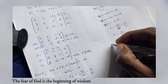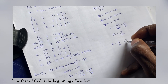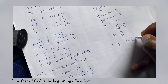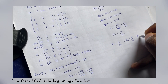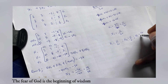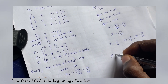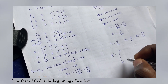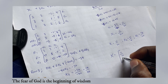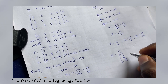So our final solutions are: x₁ = 11/20, x₂ = 5/4, and x₃ = 17/20. We can write this as the vector x = [11/20, 5/4, 17/20]. That's all about the Gauss elimination method.